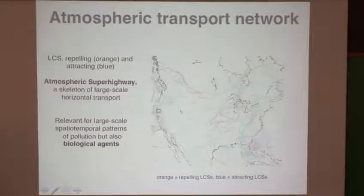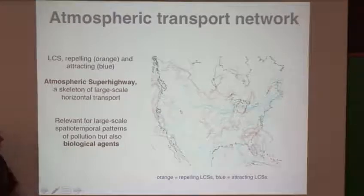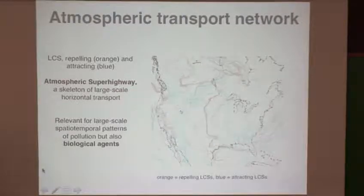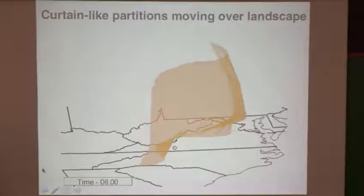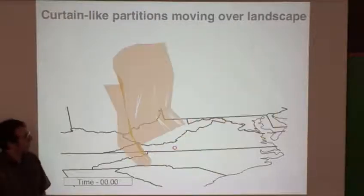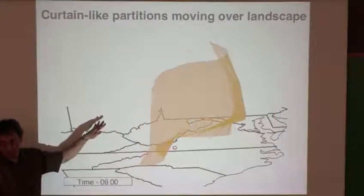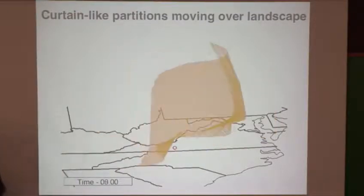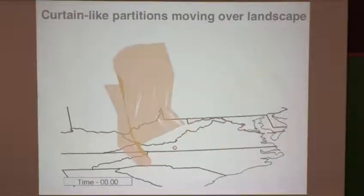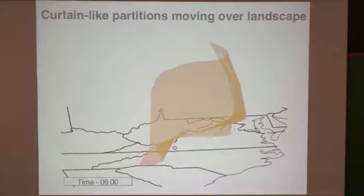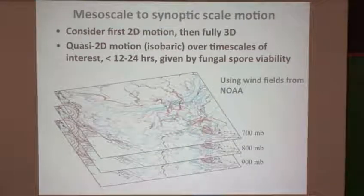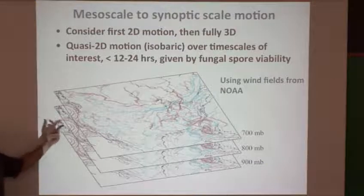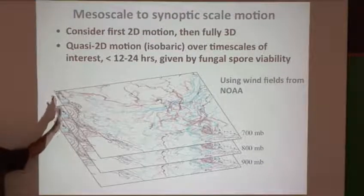We can think of this as an atmospheric transport network moving a lot of material. Looking at several pressure surfaces and assuming quasi-2D motion, connecting linear features reveals what looks like a curtain moving across the landscape. It would be better to do this in a fully 3D manner. We compute quasi-2D on pressure surfaces and would eventually like to do fully 3D. The time scales are limited by fungal spore viability — 12 to 24 hours — using wind fields from NOAA.